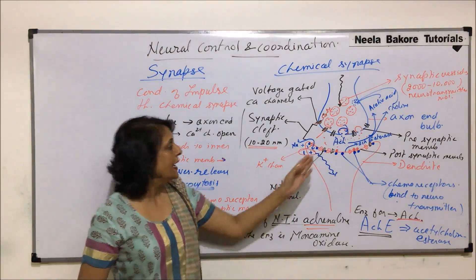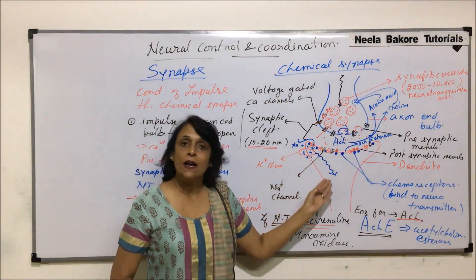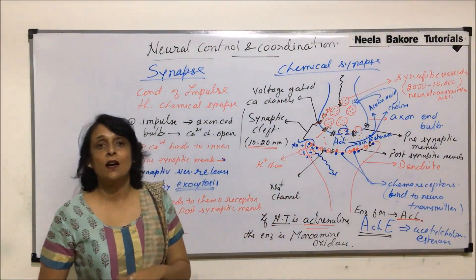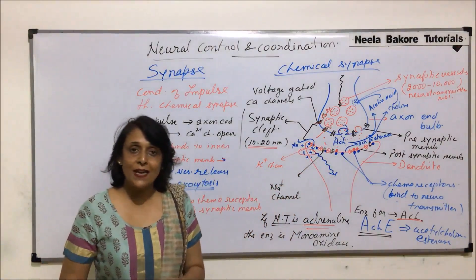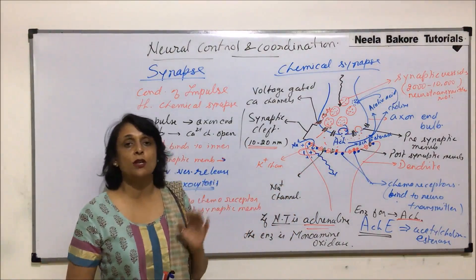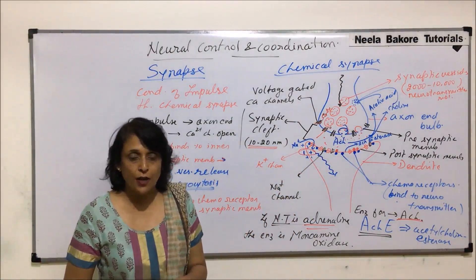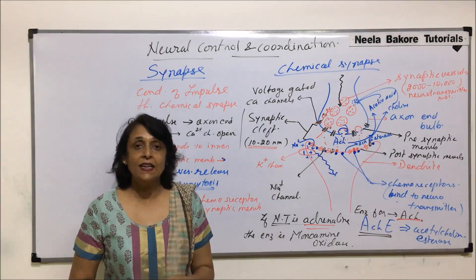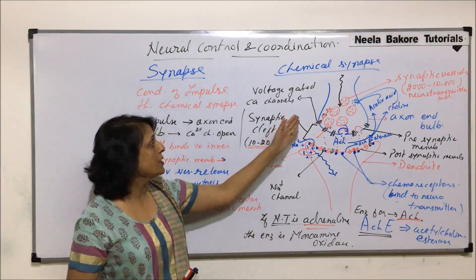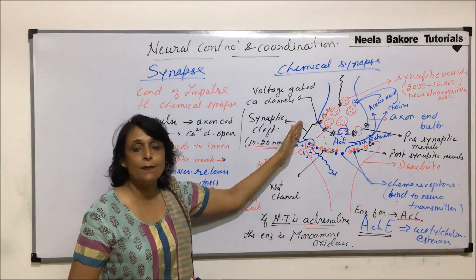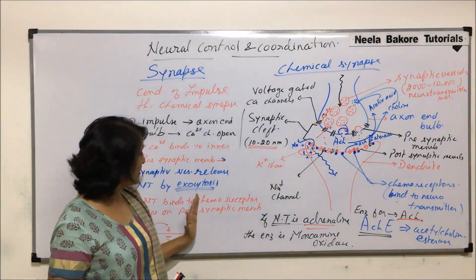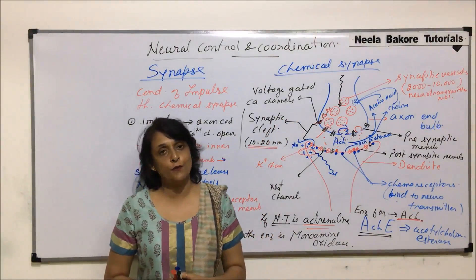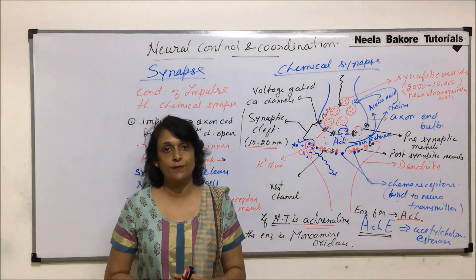This is why it is called a chemical synapse — the neurotransmitter, which is a chemical, helps in the conduction of the impulse. This covers the structure and functioning of a chemical synapse. In the next part, we will understand how chemical synapses and electrical synapses differ from each other.